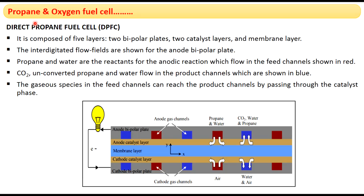The propane-oxygen fuel cell is available in two forms: DPFC (Direct Propane Fuel Cell) and the micro propane fuel cell. The DPFC construction consists of five layers — two bipolar plates, two catalyst layers, and one membrane layer. These layers are: cathode bipolar plate, anode catalyst layer, membrane layer, cathode catalyst layer, and cathode bipolar plate.